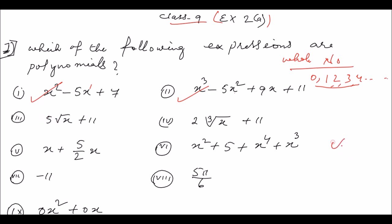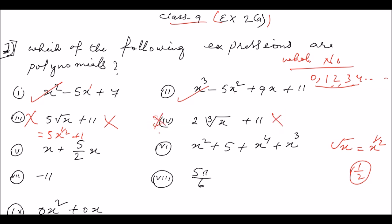Check number three: root over x. Root over x equals x to the power one-half. So root over x means x to the power 1/2 — that is a fraction, not a whole number. Whole numbers are zero, one, two, three, four. Since x to the power 1/2 has a fractional exponent, number three is NOT a polynomial. Number four has a cube root — x to the power one-third, also a fraction — so number four is also NOT a polynomial.